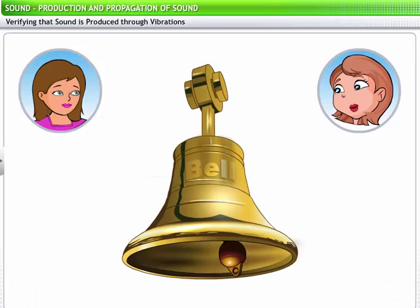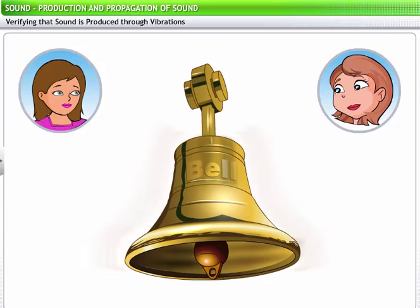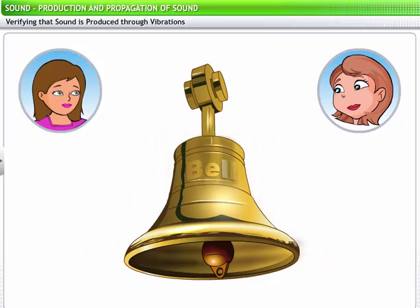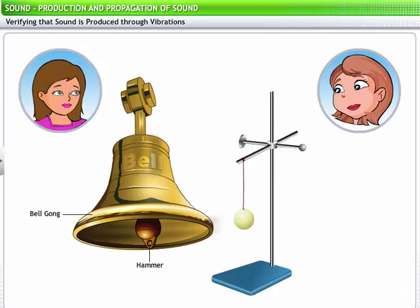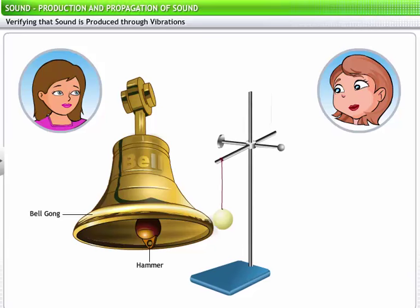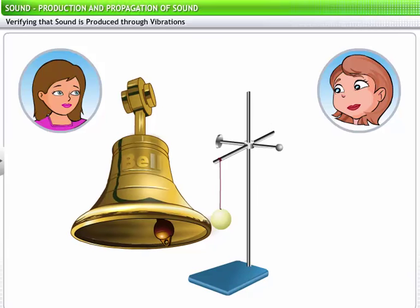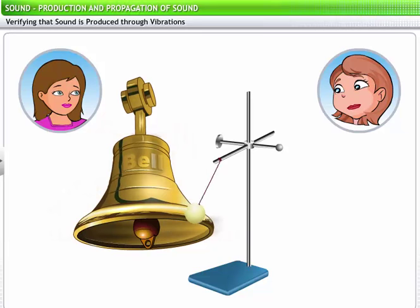Well, let's verify whether it is true through an experiment that should help convince you. Let's take a bell and ring it. Do you hear that sound? This ringing sound is due to the vibration of the bell's gong. Now, suspend a table tennis ball with a string to a stand. And then, gently bring the ball in contact with the ringing bell. You will be able to see the ball flicker away from the bell and start swinging. This is because the bell is vibrating. This confirms that the sound of the bell was being produced due to vibrations.